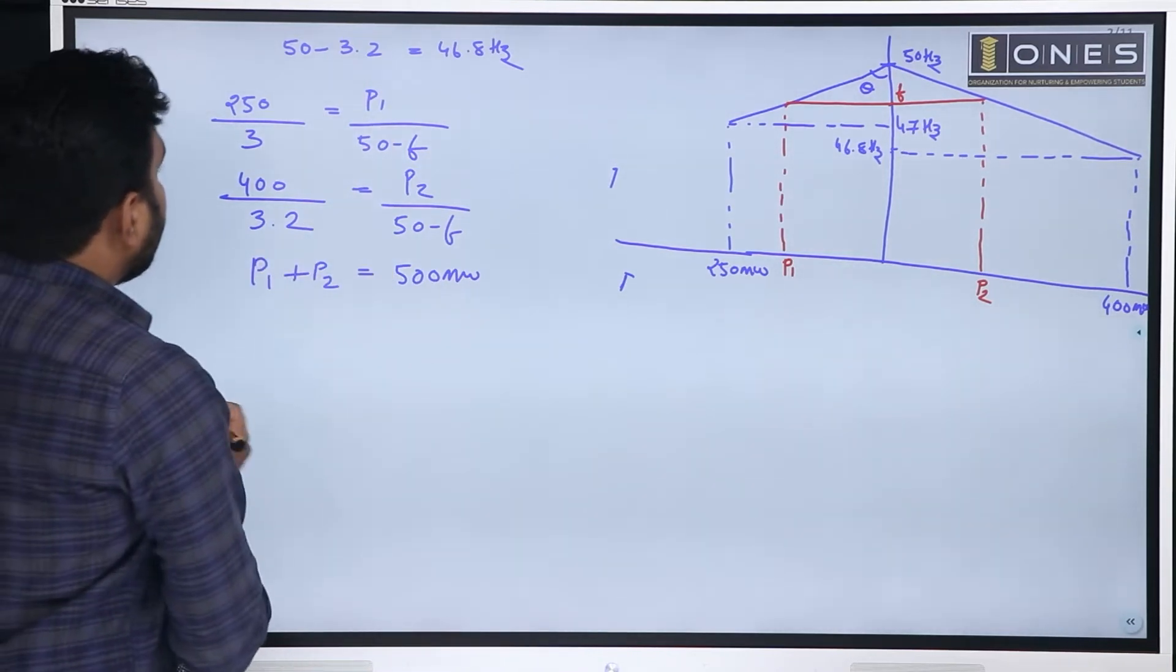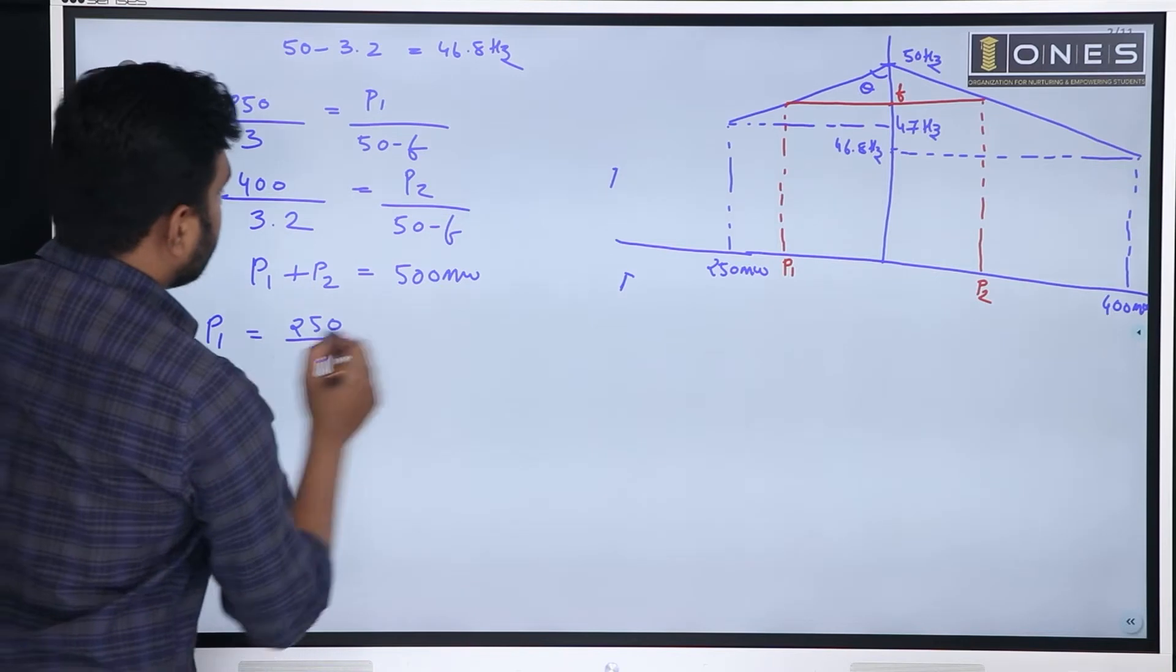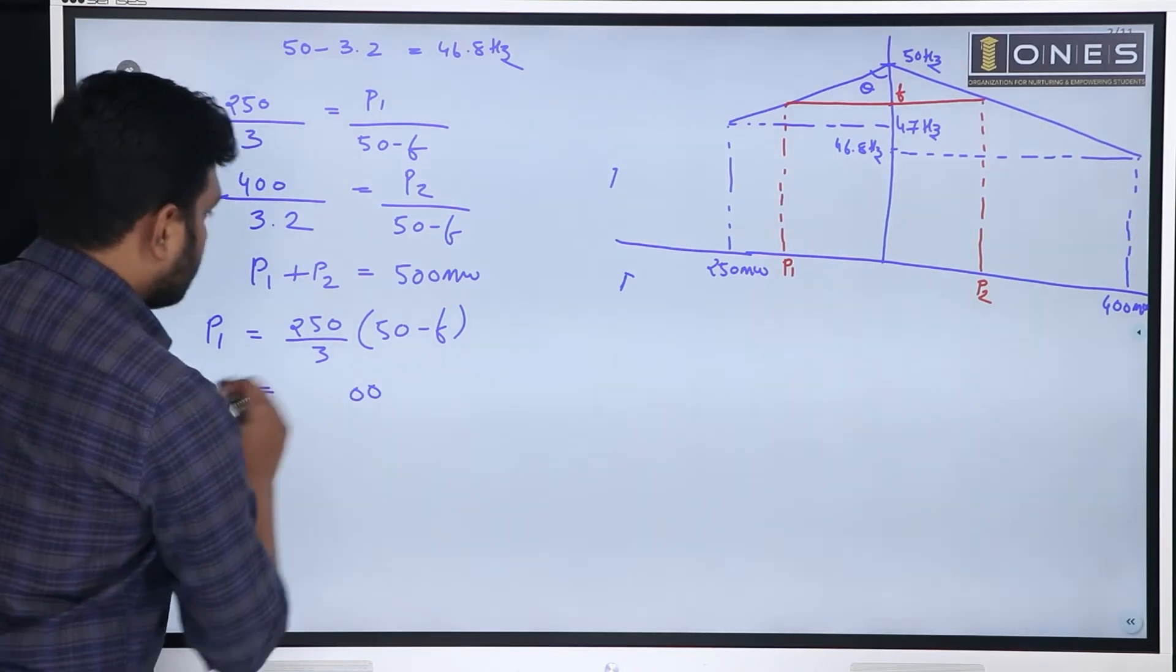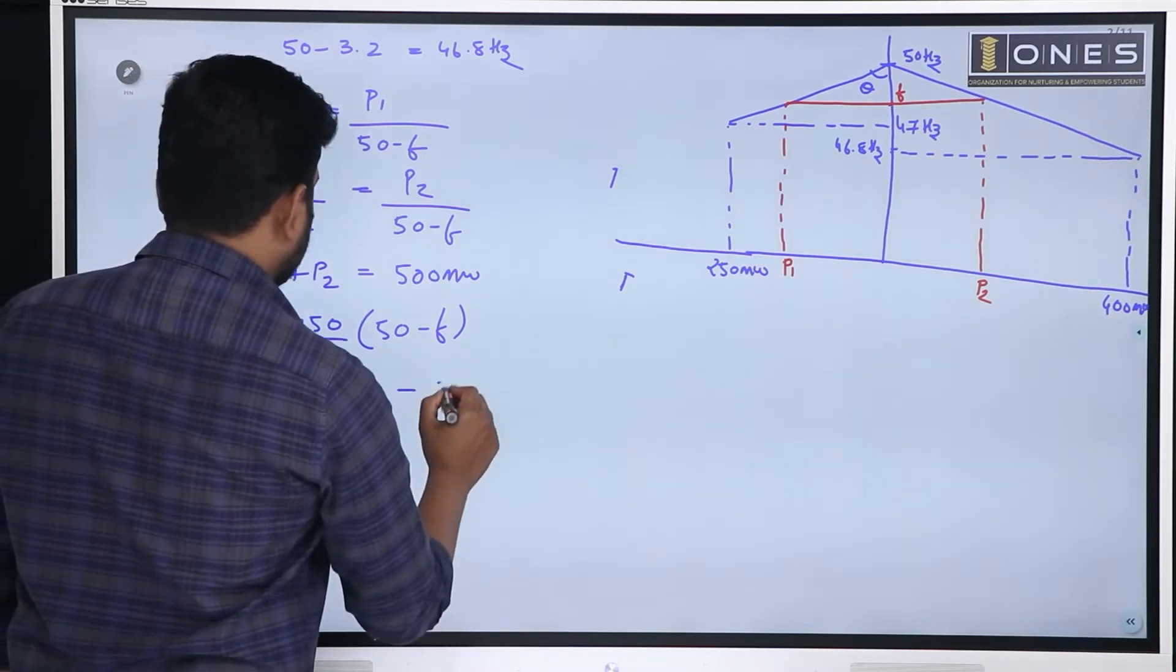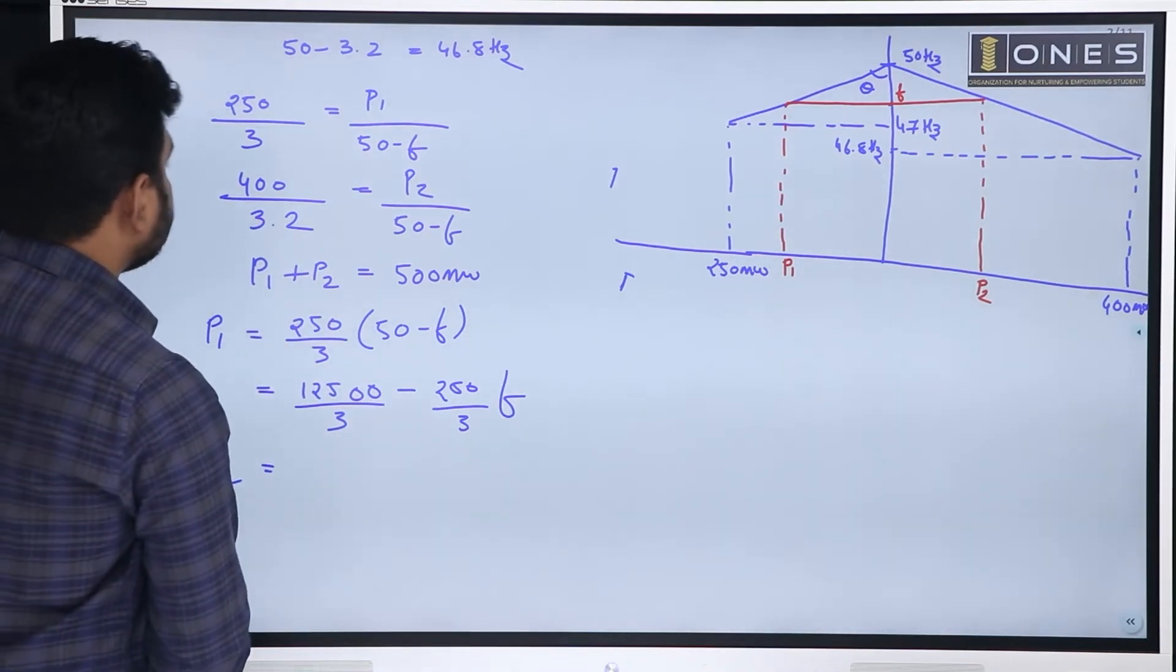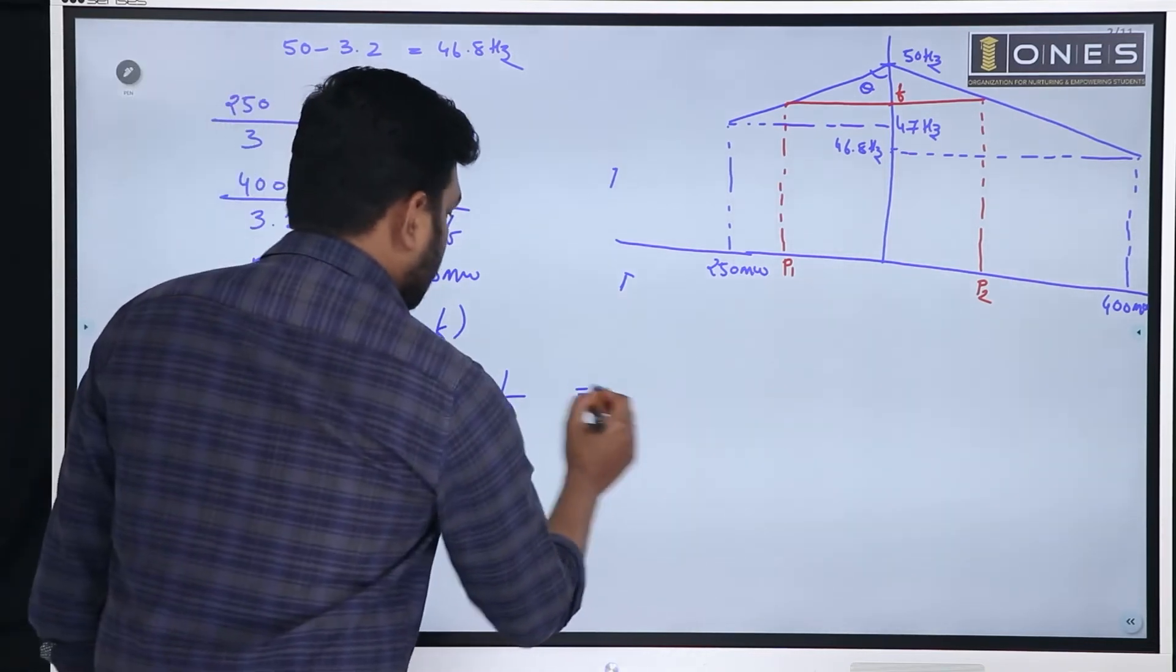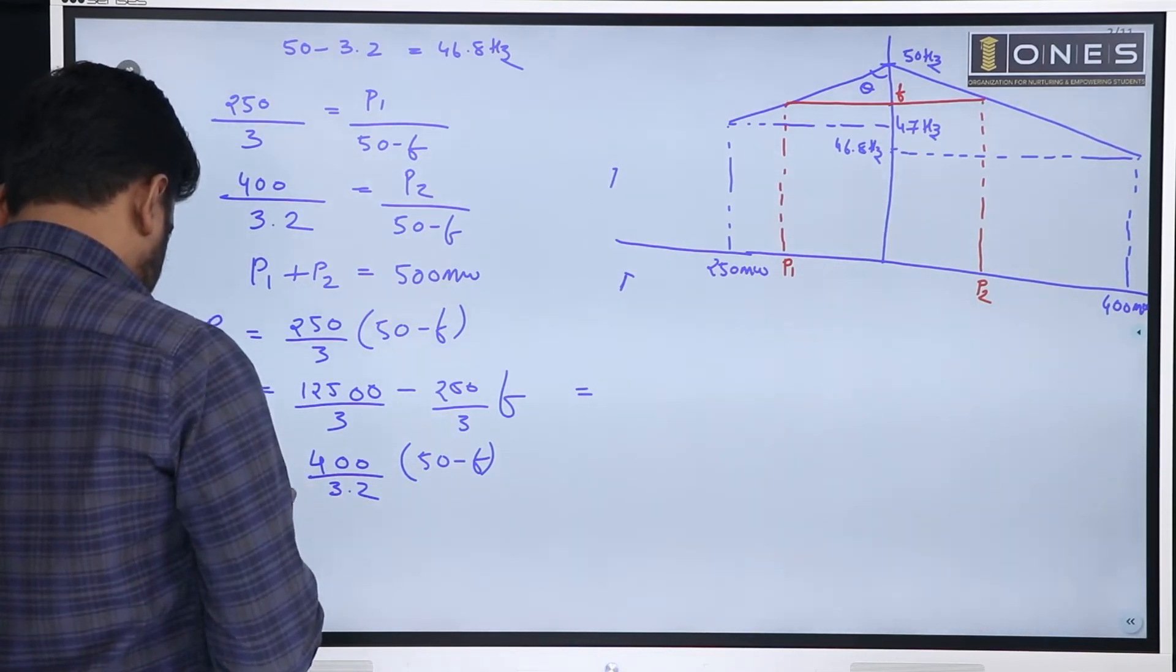First, P1 from equation number 1, P1 will be equal to 250 by 3 into 50 minus F. From second equation, let us solve it. 250 by 3 into 50 minus F. In the same way P2. P2 will be equal to 400 by 3.2 into 50 minus F. So, let us solve it.